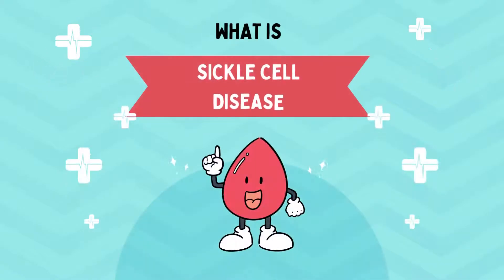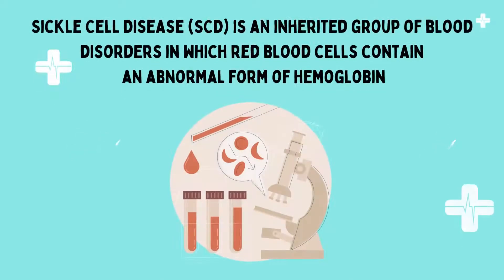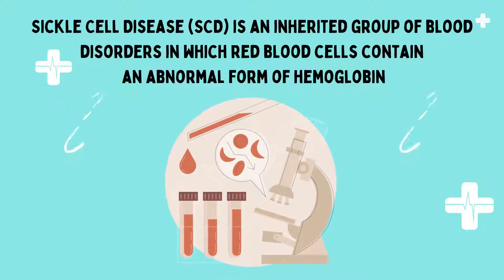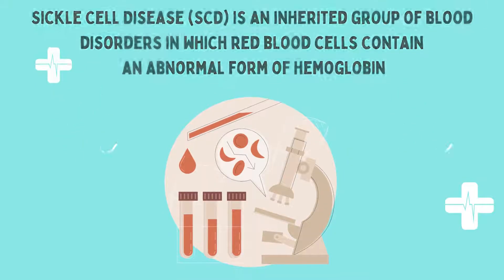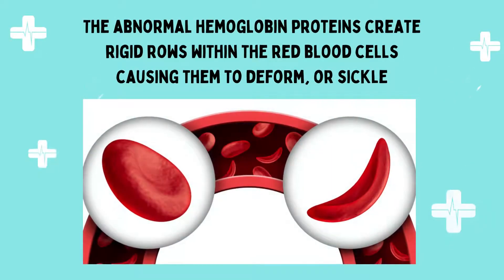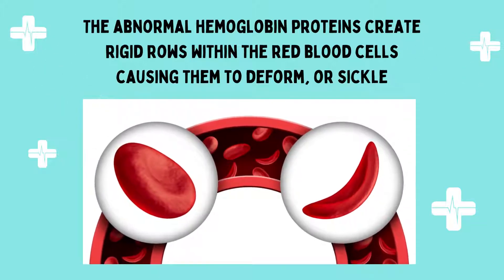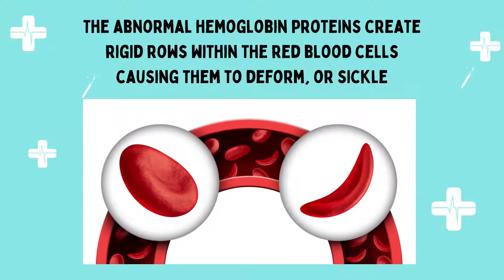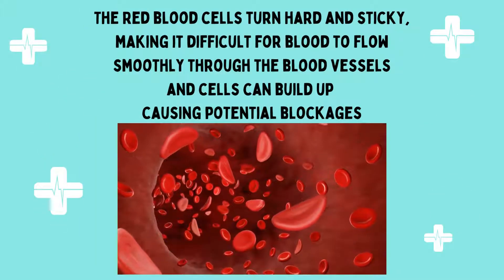What is sickle cell disease? Sickle cell disease, or SCD, is an inherited group of blood disorders in which red blood cells contain an abnormal form of hemoglobin. The abnormal hemoglobin proteins create rigid rows within the red blood cells, causing them to deform or become sickle shaped.